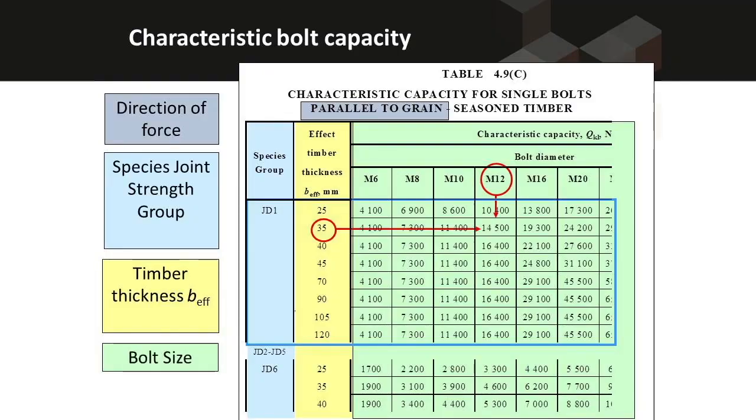Then we use the species strength joint. The joint strength group is given a J or a JD number and that is indicated in the left hand column on this table. Then the effective thickness of the timber. Thicker timber generally has higher bolt capacity because there is more timber at the bolt-timber interface to give high bearing transfer from the timber into the bolt. And finally it is a function of the diameter of the bolt. The bigger the bolt, the bigger its capacity.